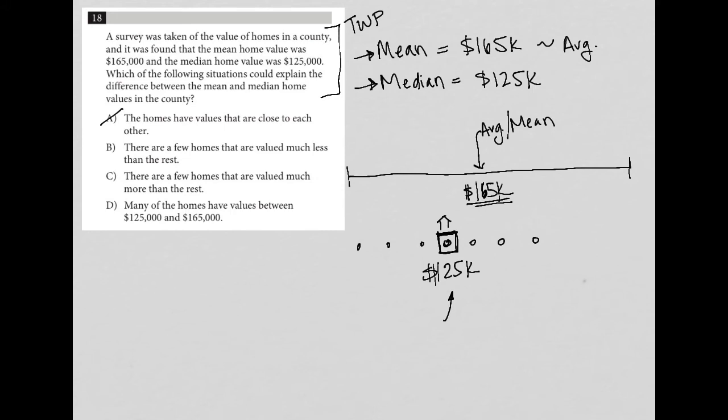Choice B says there are a few homes that are valued much less than the rest. Well, if I know that 125 is here, I don't know a few homes that are valued much less. Like if these homes here, and I chose seven, it's obviously more or it could be more than seven homes in this town or in this county, right? These two here could represent 2,000 homes, let's say. So let's say all these homes are much less, let's say 60,000 or something like that. Well, that would mean that we would expect our average to be even lower than 125, not higher than 125. So B is out for that reason.